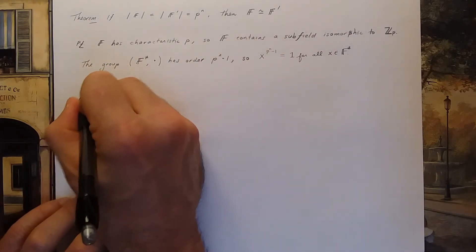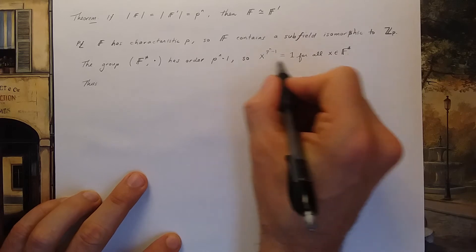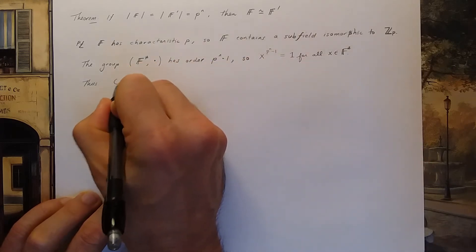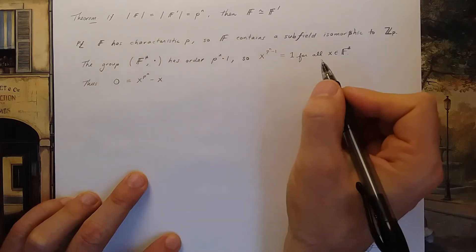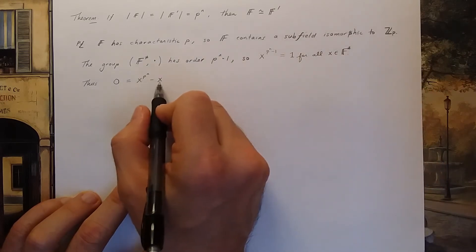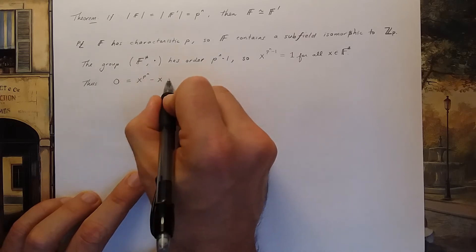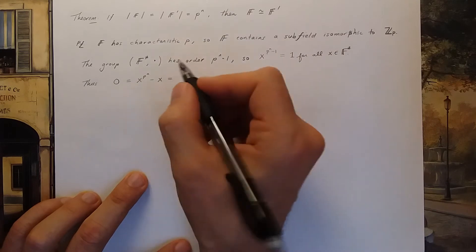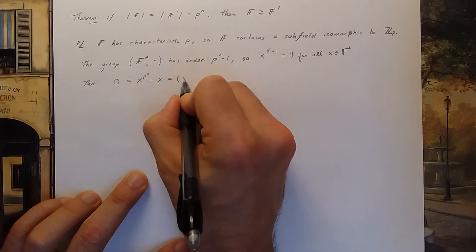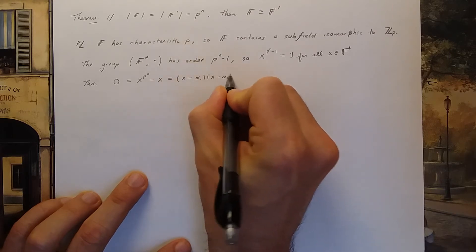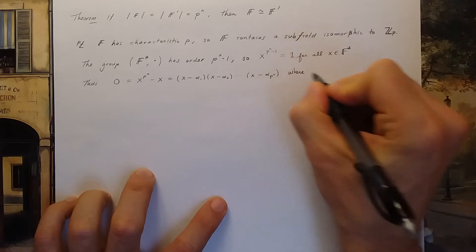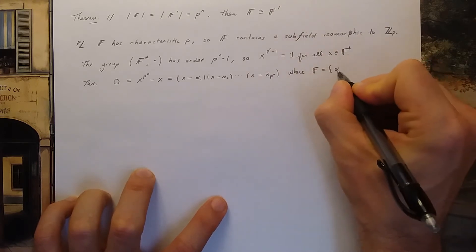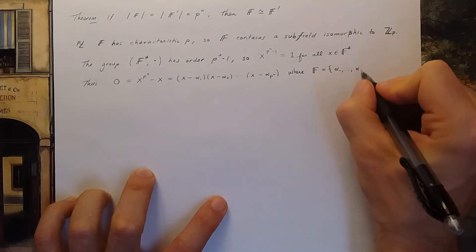Okay, what that means is I could take this identity, subtract one from both sides and multiply by x. Then I get zero has to equal x p to the n minus x. So every element in the field satisfies this relationship. That means I can factor and write this as x minus alpha one times x minus alpha two all the way up till I get to x minus alpha p n. And here I'm saying my field F is just the field containing the elements alpha one through alpha p n.